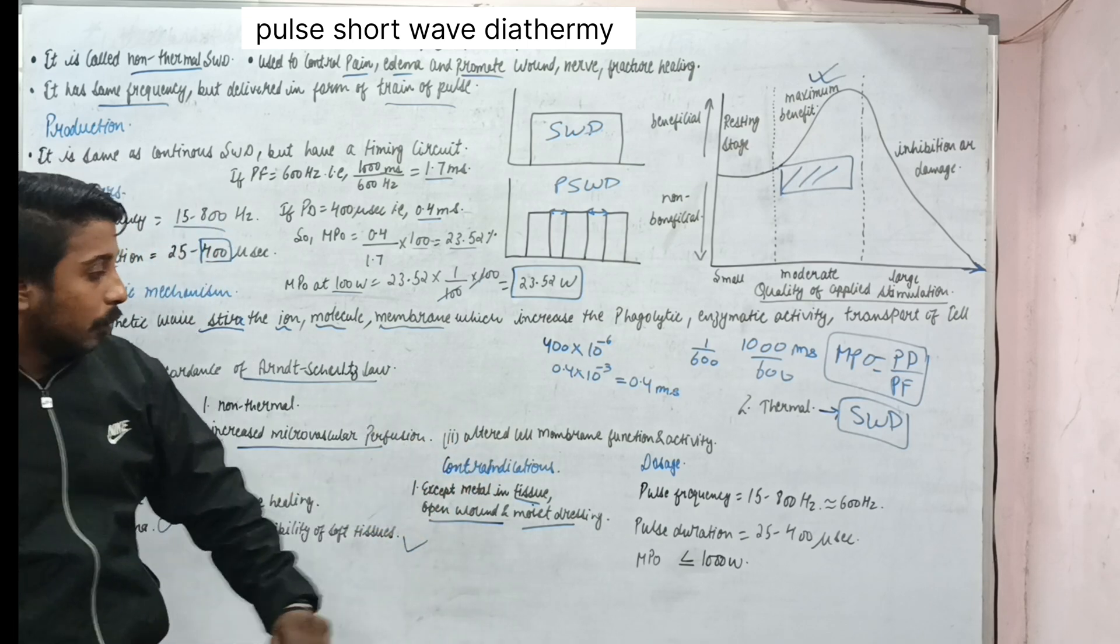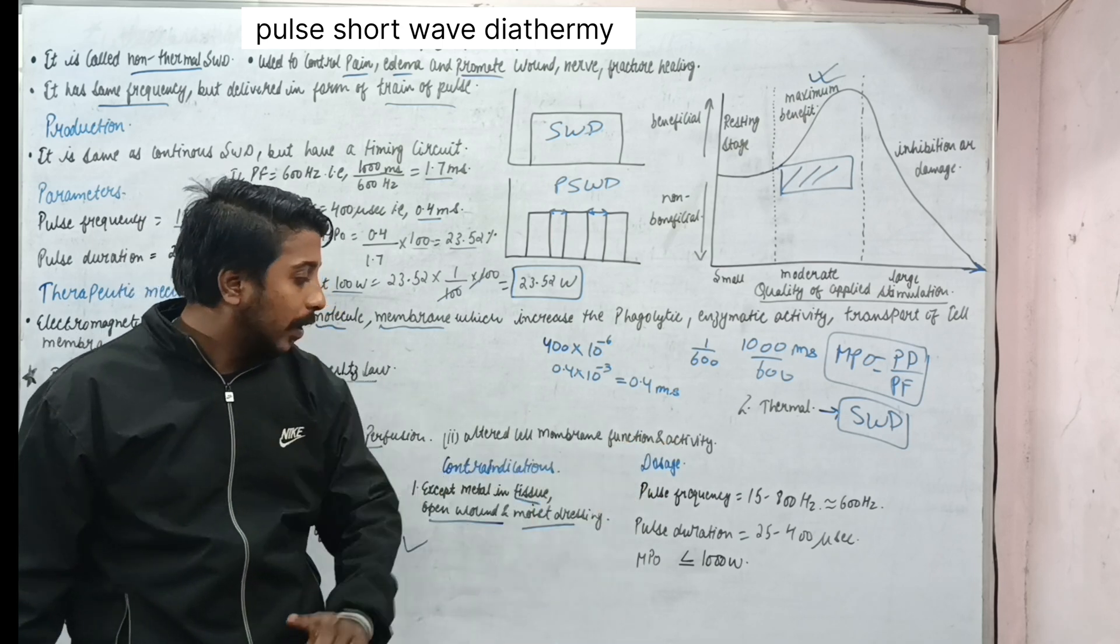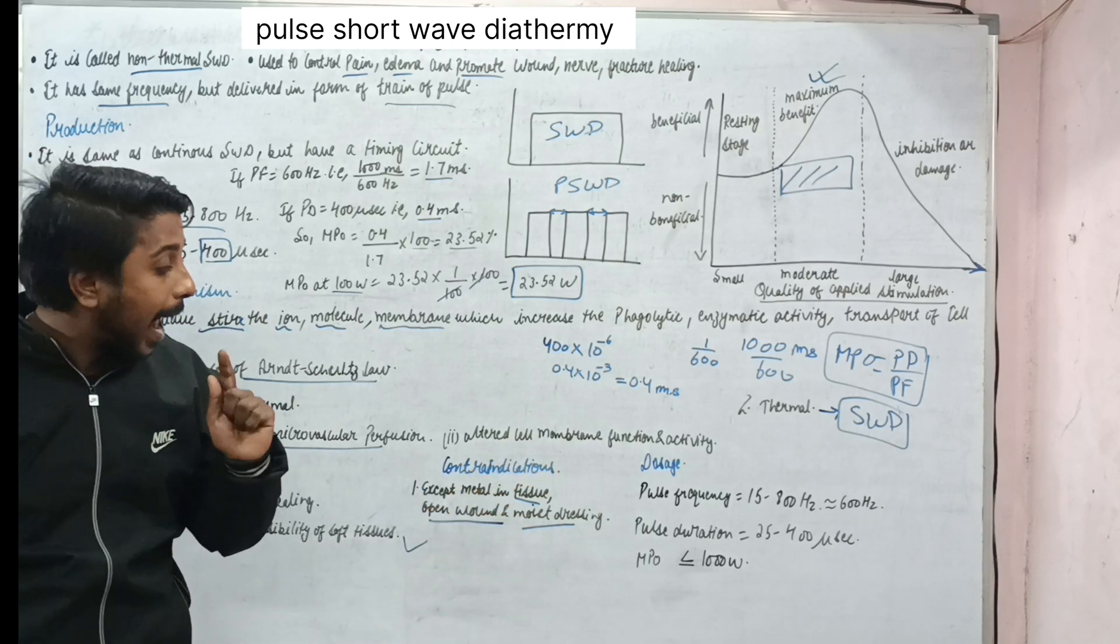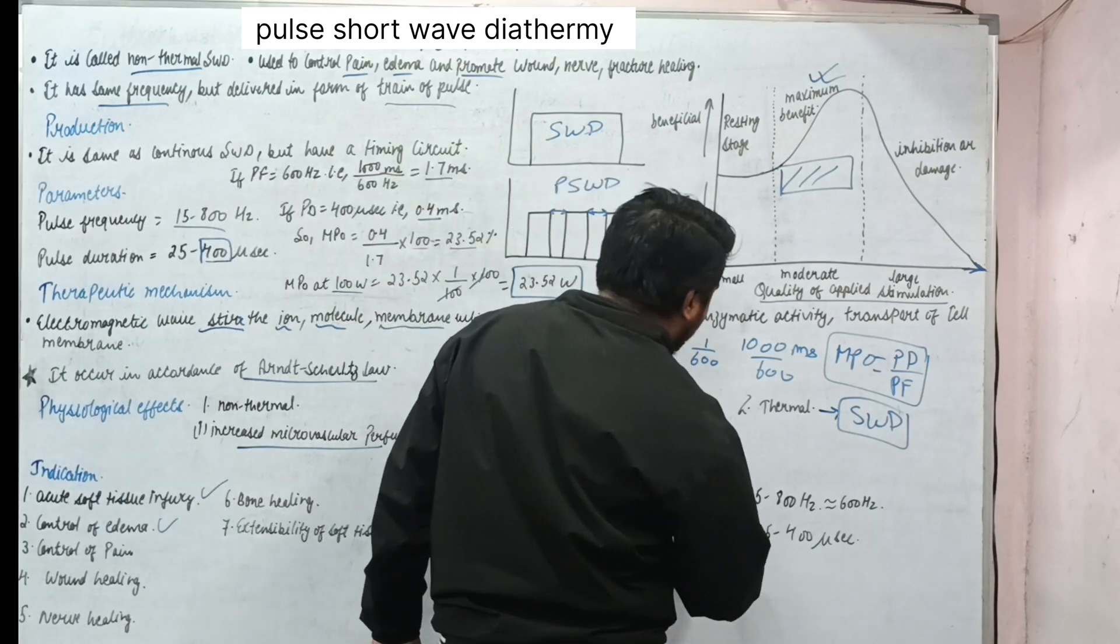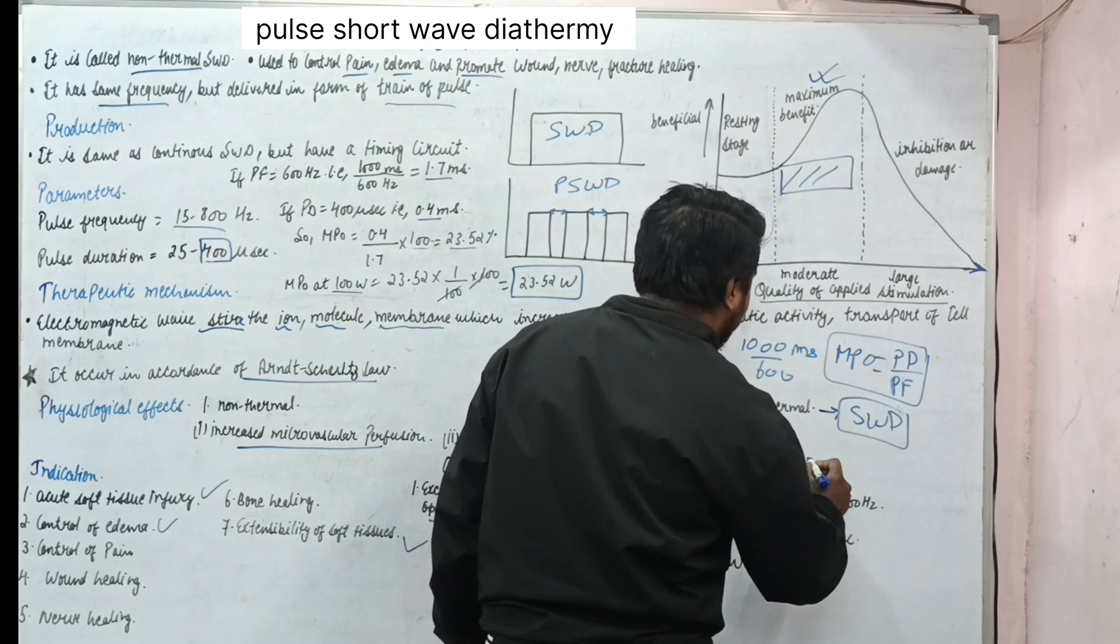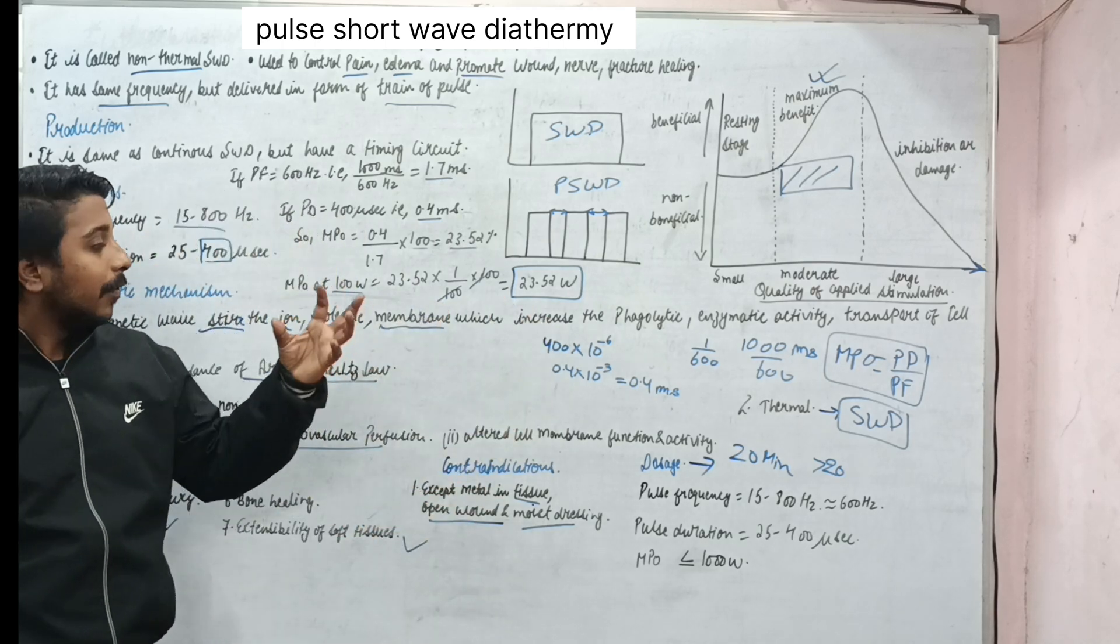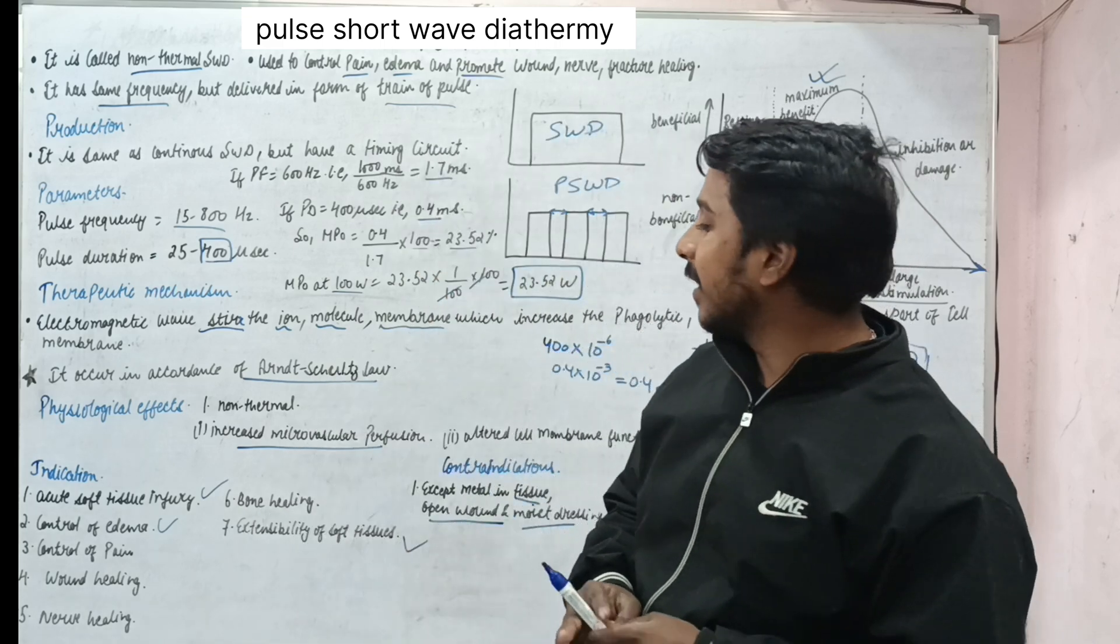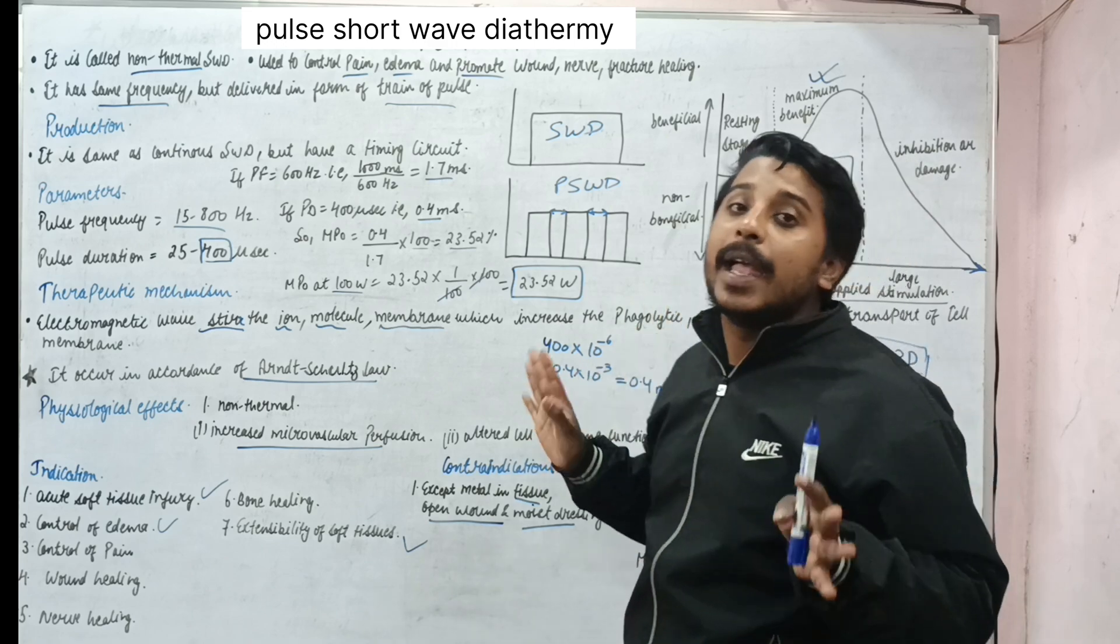Last is dosage. You can select pulse frequency, you can select pulse duration, and mean power output should be less than or equal to 1000 watt. And more is the acute condition, lesser is the mean power output. And timing is like 20 minutes some research says, even some research say greater than 20 minutes. So there is we can say not a complete evidence of the indication, so there is some sort of controversy regarding that. So we are completing the pulse short wave diathermy here.